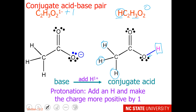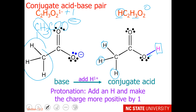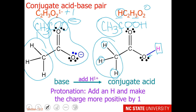One more thing about the acetate ion and acetic acid: sometimes you see them written in a way that indicates how the bonds are arranged. So instead of C₂H₃O₂⁻, you might see CH₃COO⁻ — that shows the molecule has a CH₃ group and a COO⁻ group. You might also see the acid written as CH₃COOH, showing the CH₃ group and a COOH group.